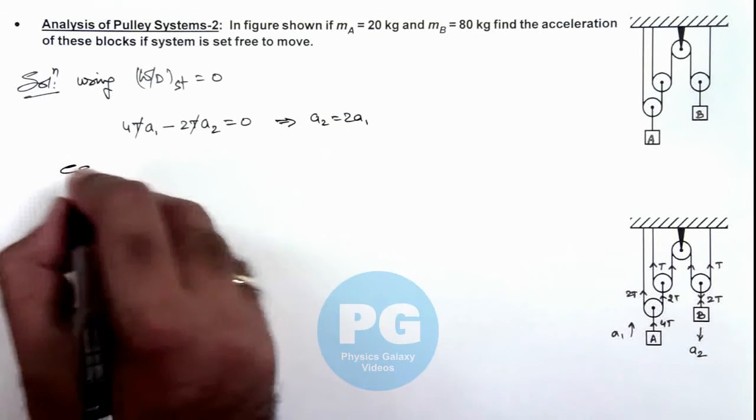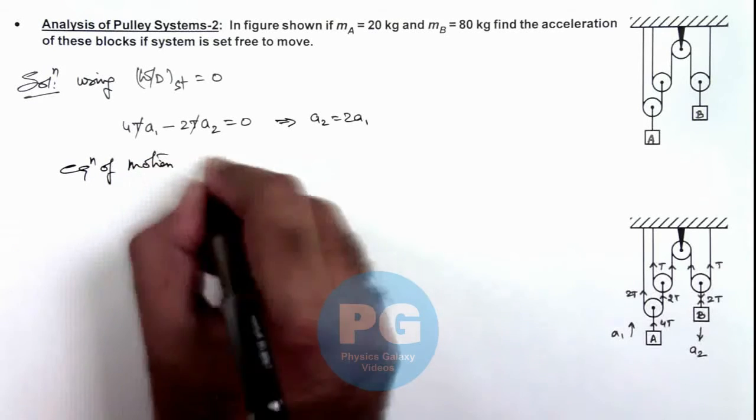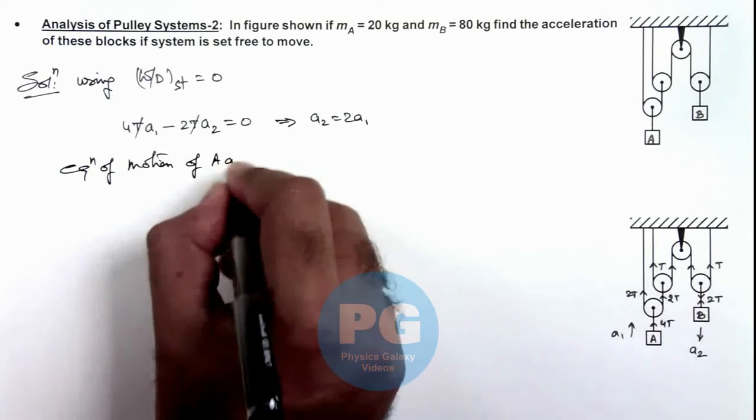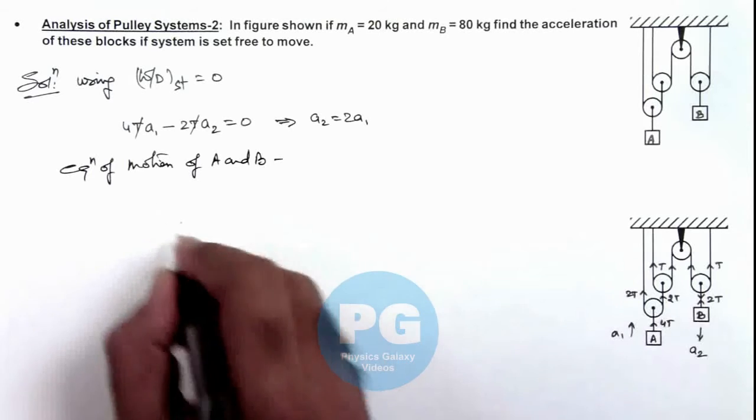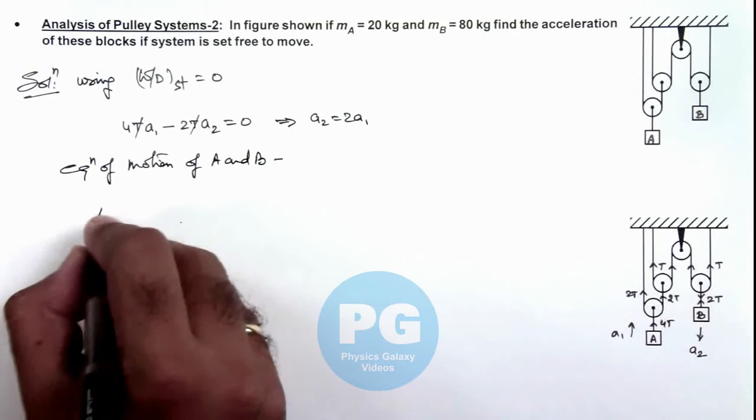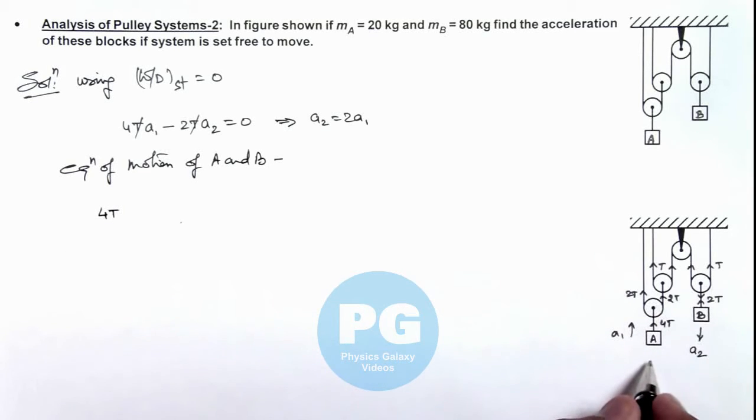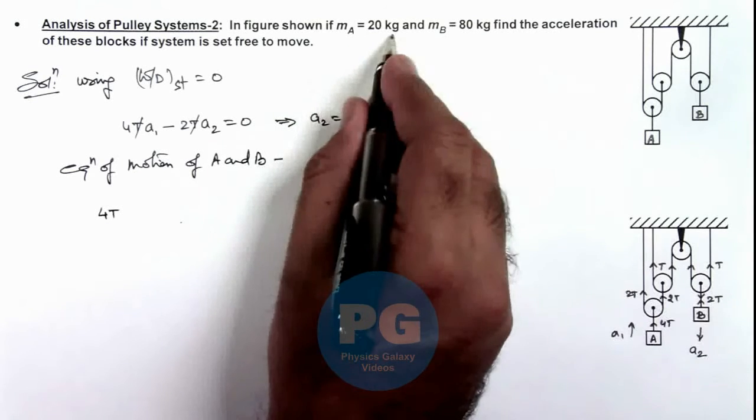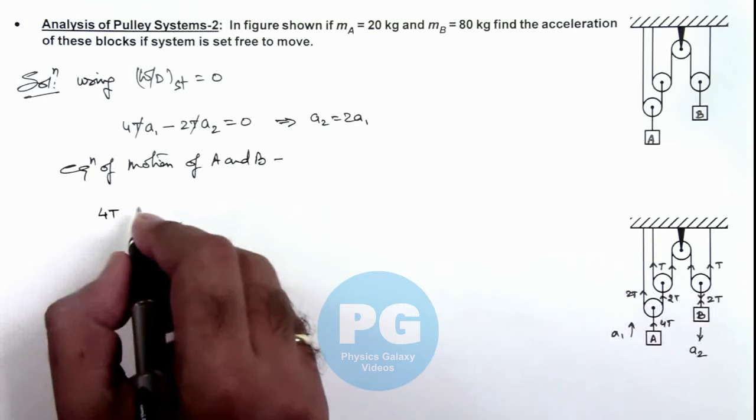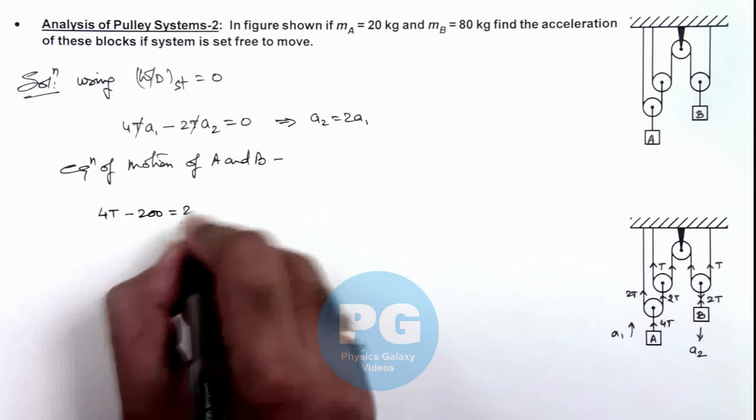Now if we write the equation of motion of blocks A and B. Here we can write for block A as it is going up, we can write the force on it is 4T in upper direction, downward its weight. As it is of mass 20 kg it will be 20g, this is minus 200, is equal to 20 a₁.